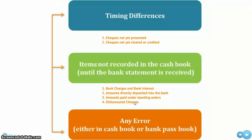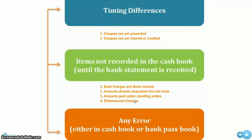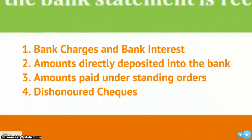In the second category, we include those items which we normally do not record in the cash book until we receive the bank statement. For example, bank charges and bank interest, amounts directly deposited into the bank account, amounts directly paid by the bank under standing orders, and dishonored checks.